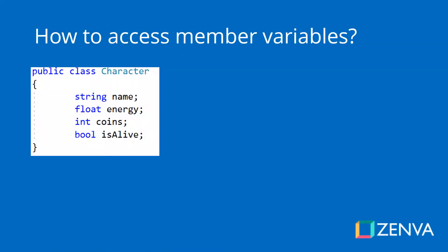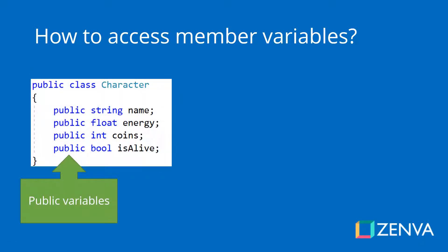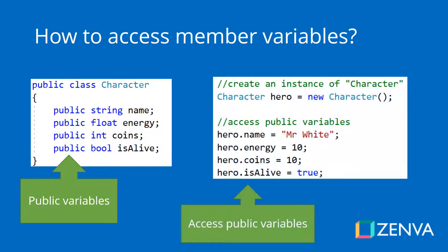Now, how can we get access to these member variables? We saw how we could create new characters, but we haven't seen how we can access them. The truth is that the way they are defined by default, we cannot access them from outside the class. What we need to add is the public keyword, which will make these member variables public — meaning they can be accessed from outside the class.